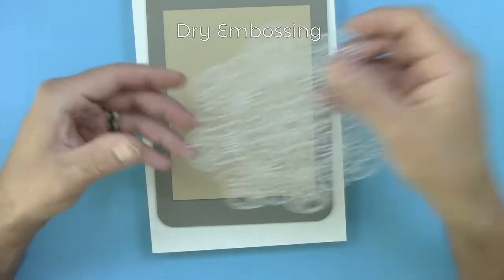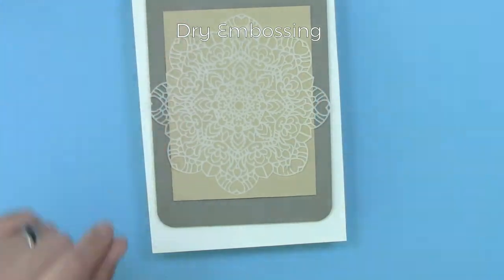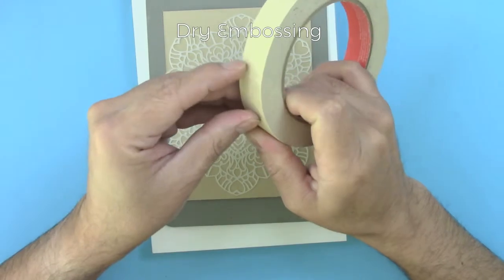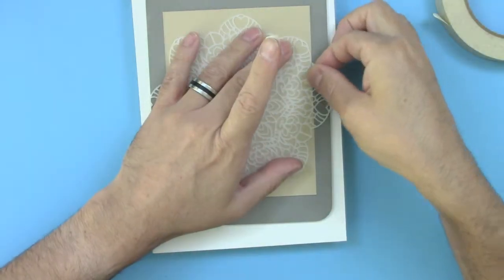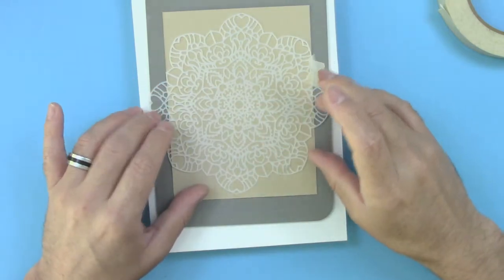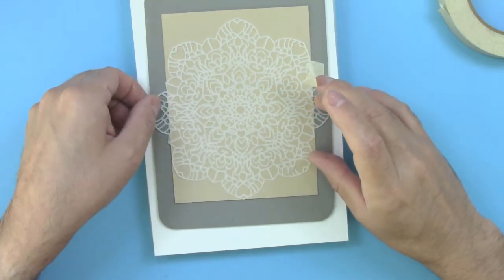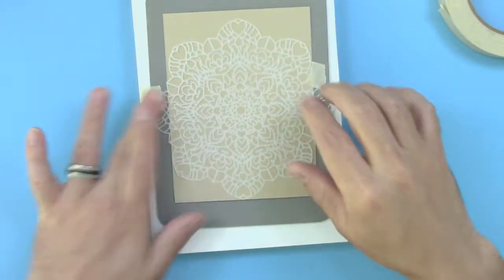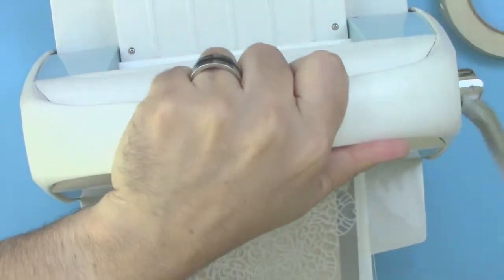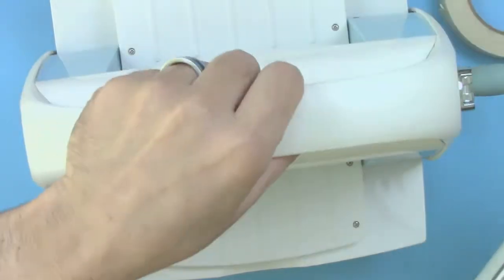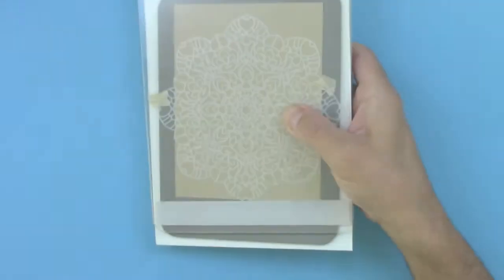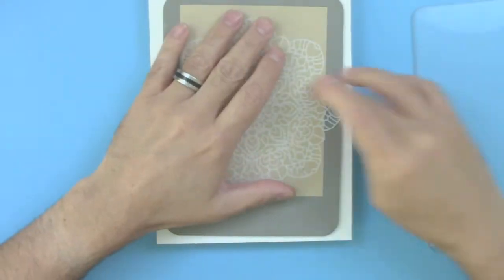Put your card stock on top and your stencil. I like to tape my stencil to the surface. It's a good idea to avoid it from shifting while you run it through your die cutting machine. Now finally, put a B plate on top and run it through your die cutting machine. In this case, a Cuttlebug. Make sure to remove the tape carefully because sometimes it sticks very well to the surface due to the pressure you apply.